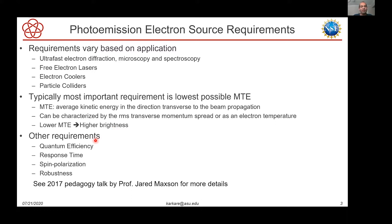You can think of MTE as the RMS transverse momentum spread of electrons or as some sort of an electron temperature. The lower the mean transverse energy, the higher the brightness, and hence as a Center for Bright Beams we care about generating the lowest possible mean transverse energy. Other requirements include quantum efficiency — how many electrons you get per photon — response time, spin polarization, and cathode robustness. The mean transverse energy and quantum efficiency are really the things we'd like to calculate from a photo emission theory.